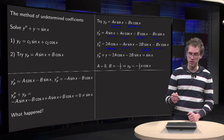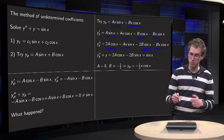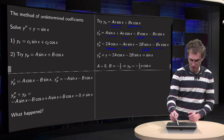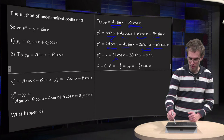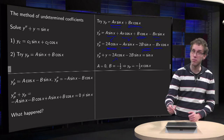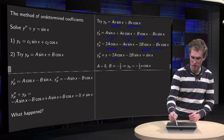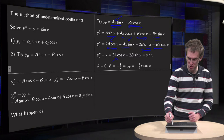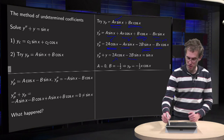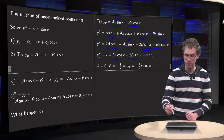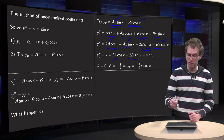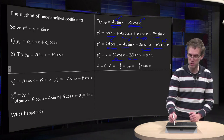Now we plug this into our differential equation y'' + y. We see that we have 2A·cos(x); the -A·x·sin(x) is cancelled by the A·x·sin(x) from y_p; we have -2B·sin(x); and the -B·x·cos(x) is cancelled by the B·x·cos(x) from y_p. So the only terms left are 2A·cos(x) - 2B·sin(x), which must equal sin(x).